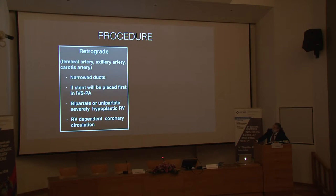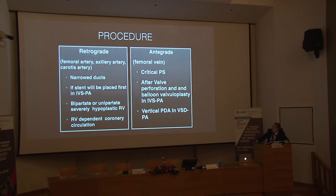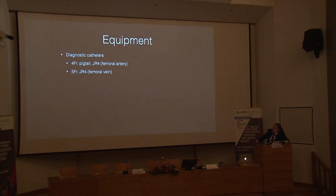The procedure can be performed from the femoral artery, axillary artery, or carotid artery in a retrograde fashion — most commonly preferred when there is a narrow ductus at the pulmonary end. If stenting a patient with intact ventricular septum pulmonary atresia before valve perforation, or if the patient has bipartite or unipartite severely hypoplastic right ventricle or RV-dependent coronary circulation, the femoral arterial approach is used. Alternatively, the femoral vein can be used in patients with critical PS or IVS pulmonary atresia after perforation and ballooning of the valve. In VSD with pulmonary atresia, crossing the VSD provides a better angle for vertical PDAs.